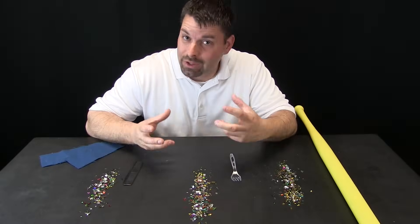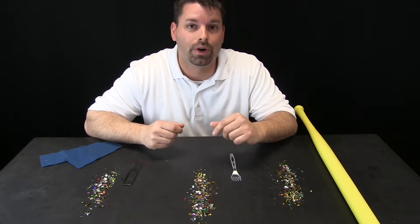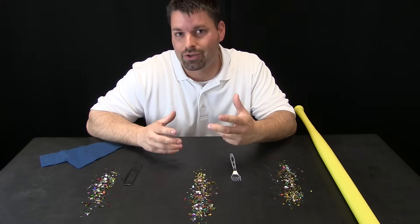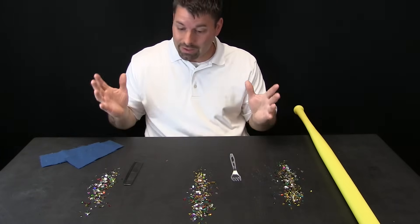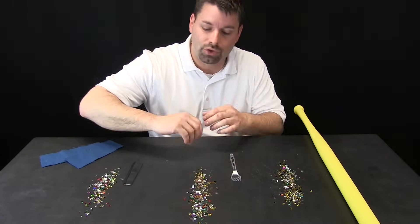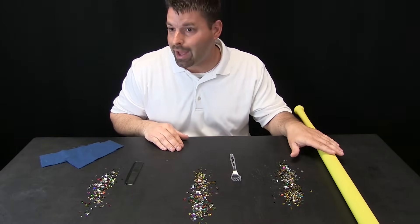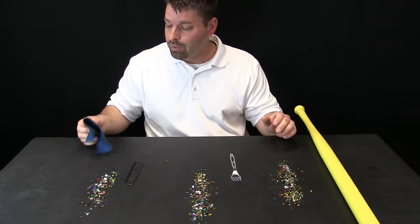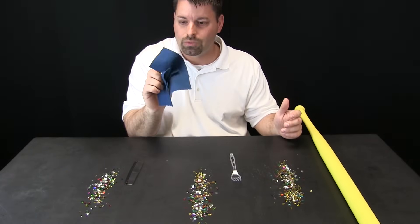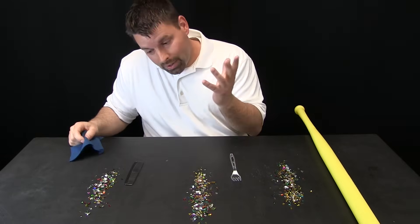So we know that balloons can pick up extra negative charges. But I have to wonder, can other things pick up extra negative charges? So to test this out, we have lines of just torn up little paper called confetti. I have a comb, a plastic fork, and a plastic bat. And instead of using fur, we are going to try using wool, just wool fabric. So let us check it out.